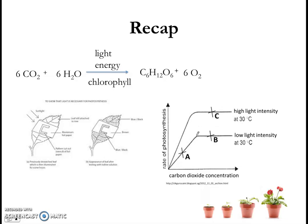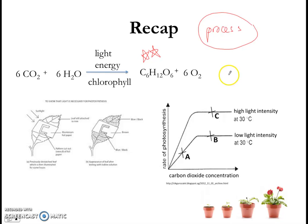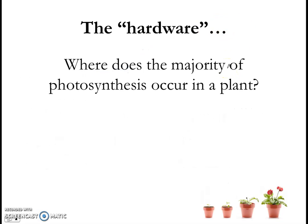Over the past week, we've been learning about the process of photosynthesis. We've seen the equation which you must know. We've seen how we can study the process of photosynthesis through different experiments. We looked at limiting factors and graphs, and how to read these kinds of graphs. So we've looked at the process of photosynthesis — in a sense, the software of photosynthesis. And now, we're going to turn our attention to the hardware of photosynthesis.